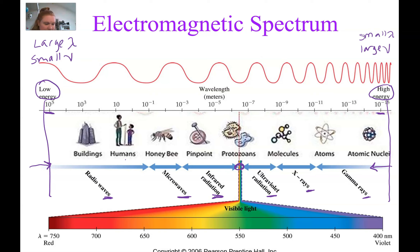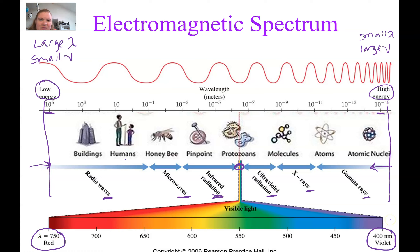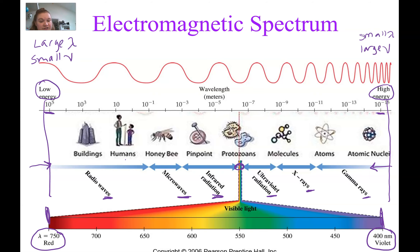Let's look at the visible light section. We can only see light if its wavelength is between 750 nanometers and 400 nanometers — a very small range. The rankings are consistent: red light has the largest wavelength, smallest frequency, and smallest energy, while violet light has the smallest wavelength, largest frequency, and largest energy.